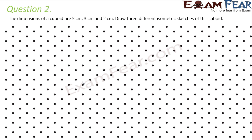Question number two: the dimensions of a cuboid are 5 cm, 3 cm, and 2 cm. Draw three different isometric sketches of this cuboid. You might be wondering how we can draw three different isometric sketches of the same cuboid. That is very much possible because you get different views of the same cuboid when you look at it from different sides — front, top, or side — so it depends on the angle from which you are looking.